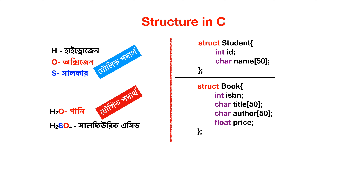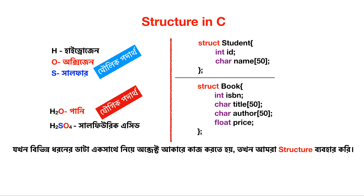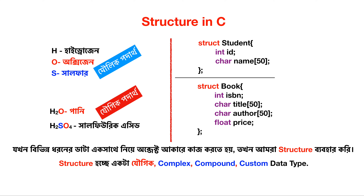What is a struct? For example, a struct named 'book' with curly brackets containing fields: title, author name, and price. The structure is used as a complex data type, also called a custom data type or compound data type.